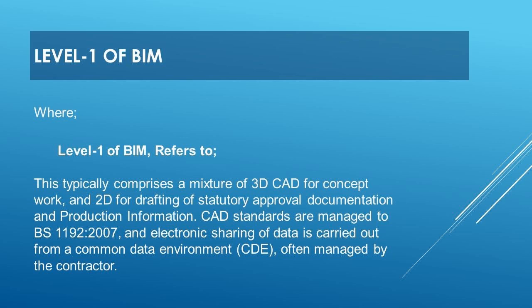Level 1 of BIM typically comprises a mixture of 3D CAD for concept work and 2D for drafting of statutory approval documentation and production information. CAD standards are managed to BS1192:2007, and electronic sharing of data is carried out from a Common Data Environment (CDE), often managed by the contractor.